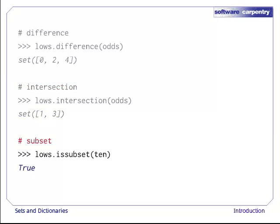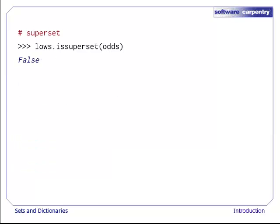Subset doesn't produce a new set. Instead, it just reports whether all the elements in one set are present in another. Notice the order. Lowe's.subset10 checks whether Lowe's is a subset of 10, not the other way around. Of course, the complementary method superset also exists and does what you'd expect.